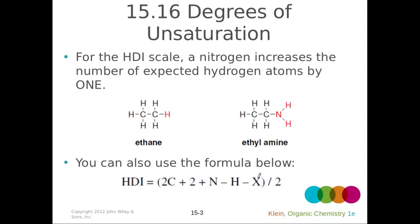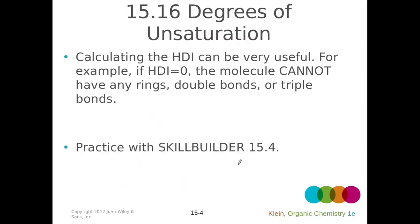We can use this formula if we have a fairly complicated molecular formula to calculate our degrees of unsaturation or hydrogen deficiency index. Our HDI is given by: (2 × number of carbons + 2 + number of nitrogens − number of hydrogens − number of halogens) / 2. Most of the time you don't really have to use this formula. You can just compare the number of hydrogens you have relative to the number of hydrogens that would be in the molecule if it were fully saturated.